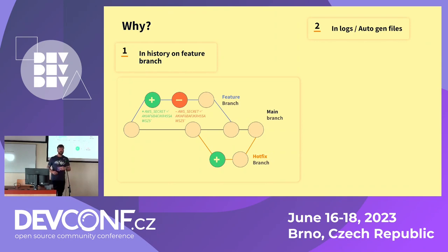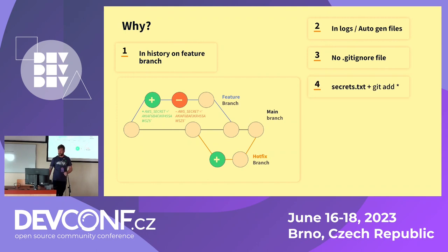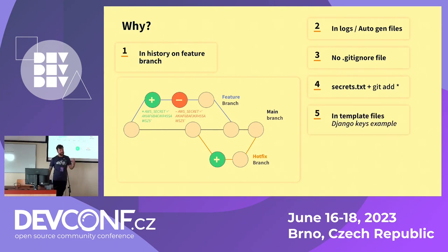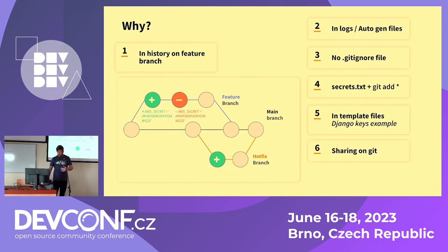We also find secrets in logs or auto-generated files — say you're doing a debug, you've got a problem, so you dump your environment in the debug log, and your environment has environment variables which are secrets. We find them when there's no .gitignore — a simple file that prevents certain files from entering your git repositories. We find lots of things with wildcard commands like 'git add .' — if you've got a 'secrets.txt' file in there, that gets captured. We find them in templates too — for example, Django automatically creates keys when you initialize a project, and unless you know they're there, they end up in your directory. And even if you remove them later, they're still there in history. People also just find it convenient to share secrets on git in an .env file because they think they're protected by authentication — but source code is not as private or secure as you expect.